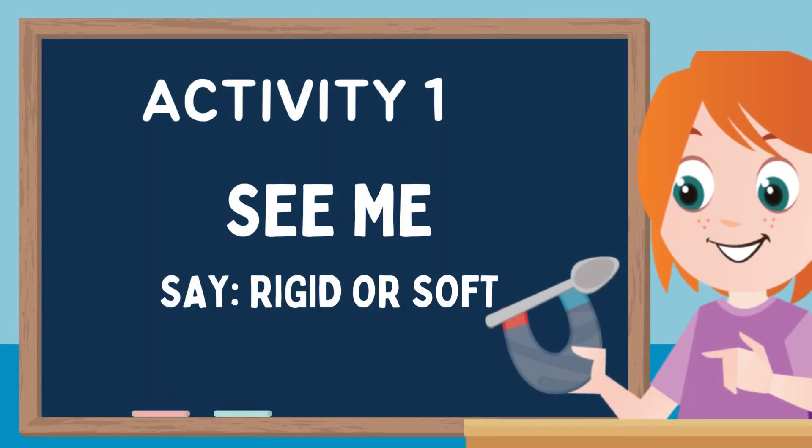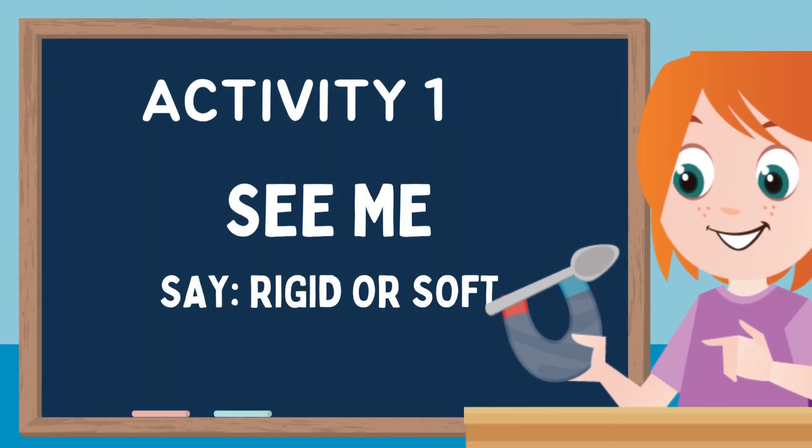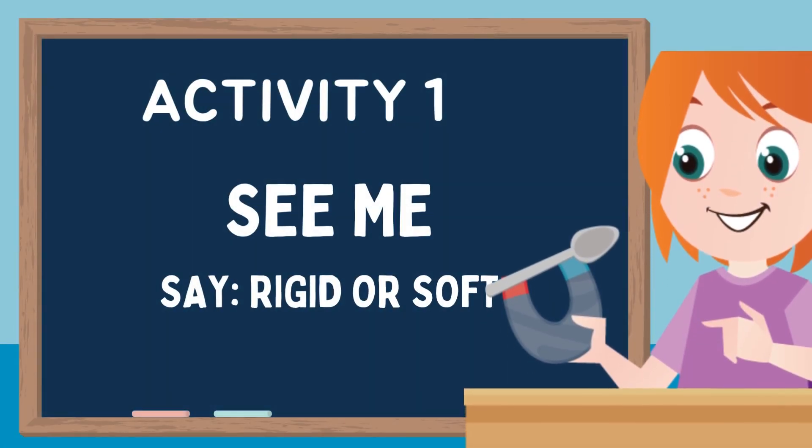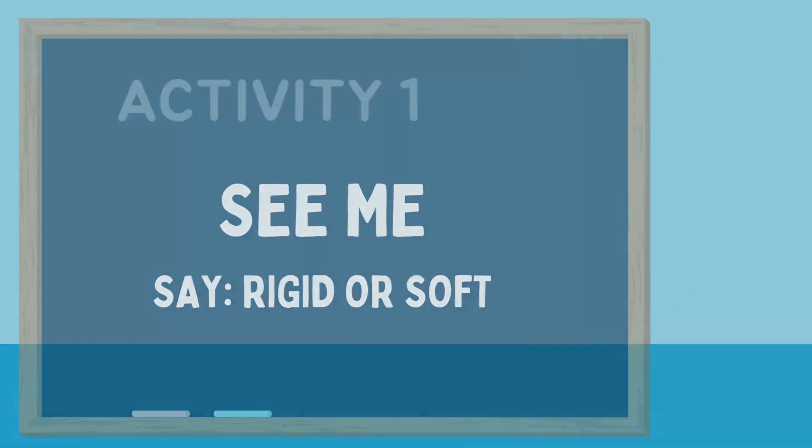Activity number one: Look at the object, then say if it is rigid or soft.